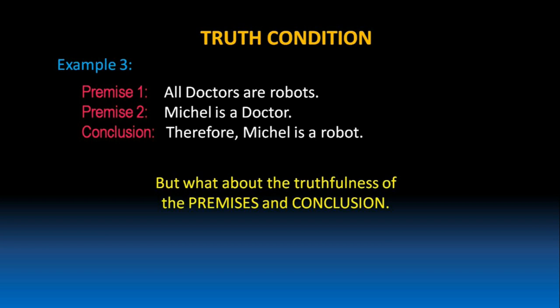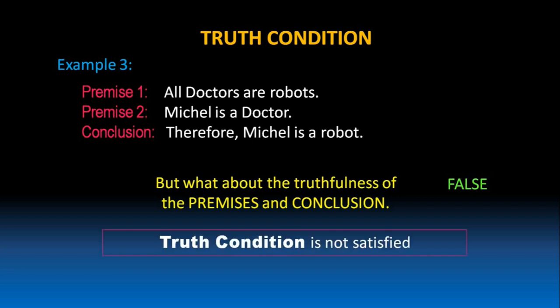But what about the truthfulness of the premises and the conclusion? Premise 1 says all doctors are robots. Is it true in the world in which we are living in? Are all doctors robots? It is false. Because premise 1 is false, it leads to the wrong conclusion that Michael is a robot just because he is a doctor. So, we can say, truth condition in the above argument is not satisfied.